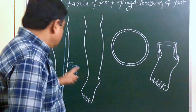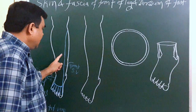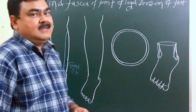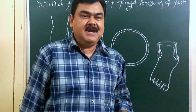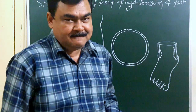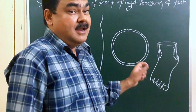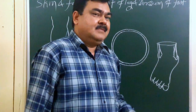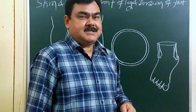So these are the cutaneous veins present in this region — the front of the leg and the foot. These superficial veins, the great saphenous vein and small saphenous vein, are connected with the deep veins by perforating veins. These are clinically very important and we will discuss them later in another section.